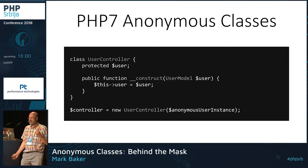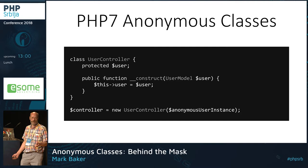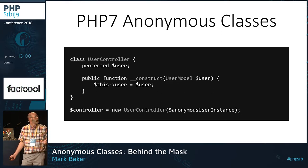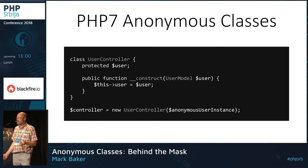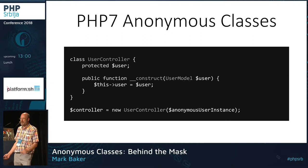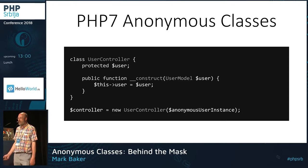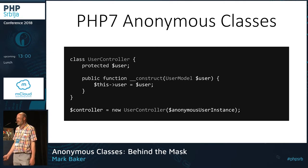When we have our User Controller that accepts an argument type-hinted as User Model, we can actually pass in our anonymous instance because it matches that signature — it extends from User Model. I can create any number of models I want with different traits, dynamically modifying the traits as necessary, and create all kinds of different extended models as and when I need them.